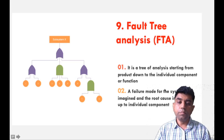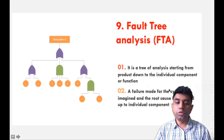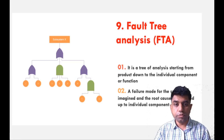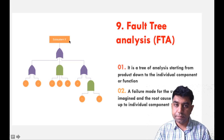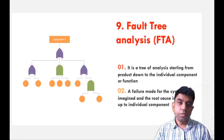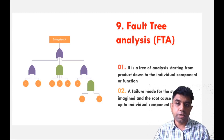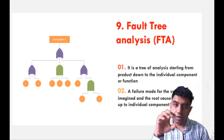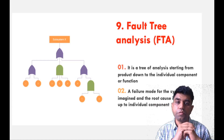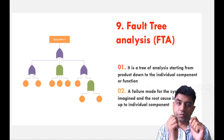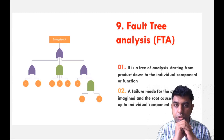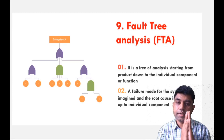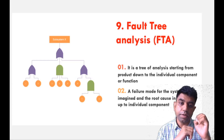A failure mode for the system is imagined and the root cause is analyzed up to the individual component. The appearance of this particular diagram is like a tree. Before this, we also understood about the Ishikawa diagram — a diagrammatic representation of cause and effect — and here also we have a diagrammatic representation so we can get a better idea of how a particular event happens.